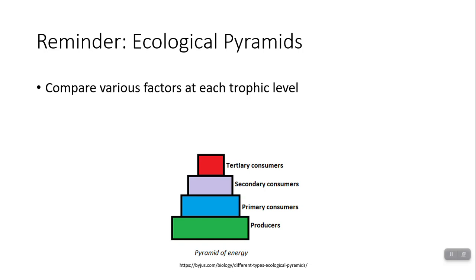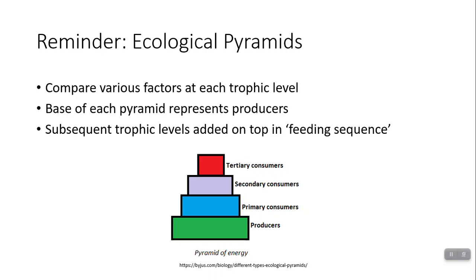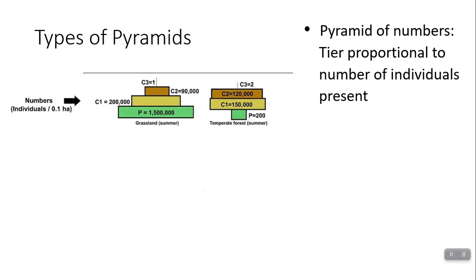So before we move into that, let's remember ecological pyramids. These are diagrams that are going to compare different things at various trophic levels. So you start at the base of the pyramid is going to be the producers. And that's going to represent the amount of some quantity you find in producers. Then you're going to add each trophic level on top of that. So first primary consumers, then secondary, then tertiary, if you have them. After that, quaternary consumers.